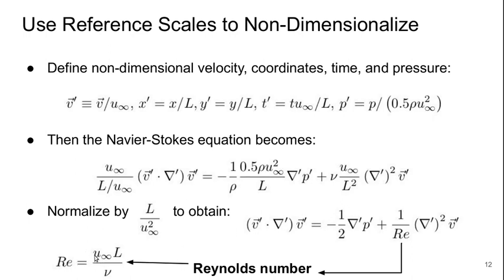The Reynolds number is of course u∞ times L over ν, where ν is the kinematic viscosity, which is the dynamic viscosity divided by the density.